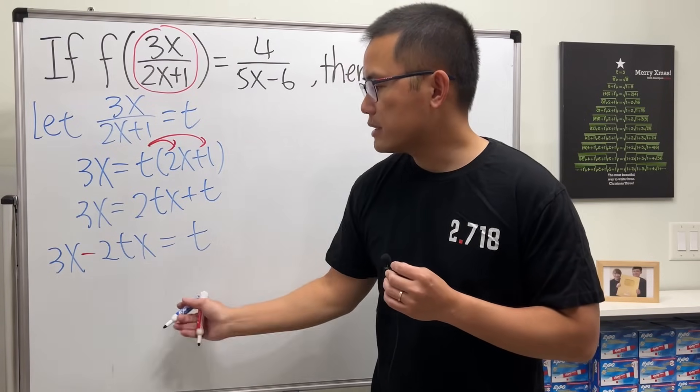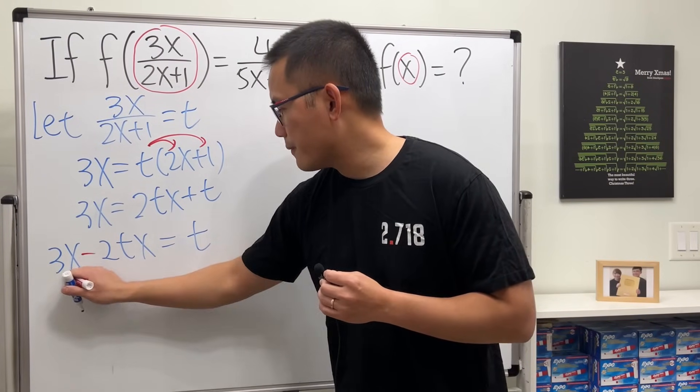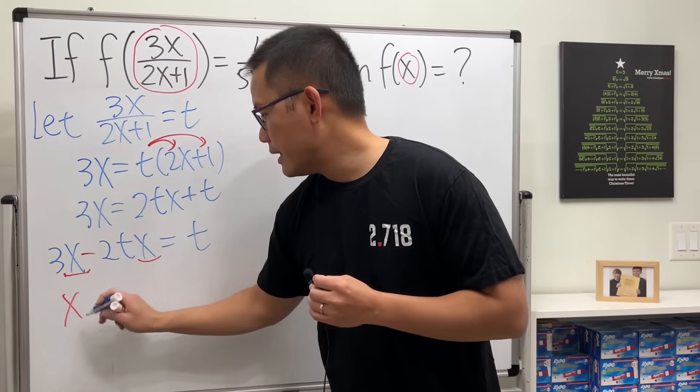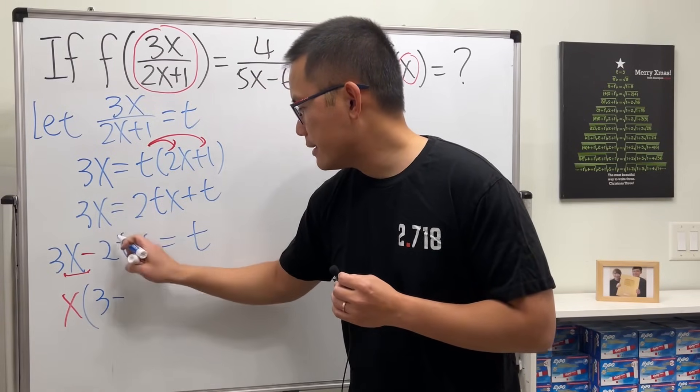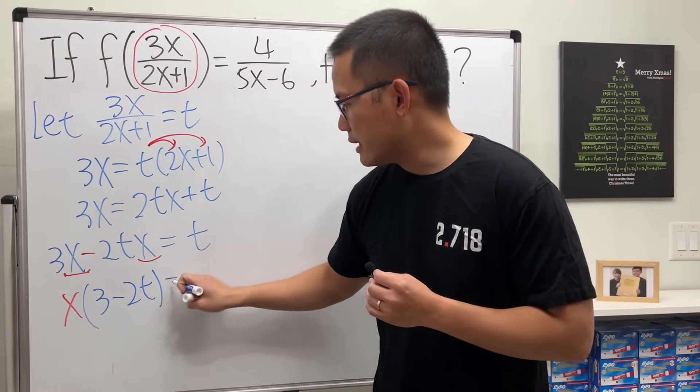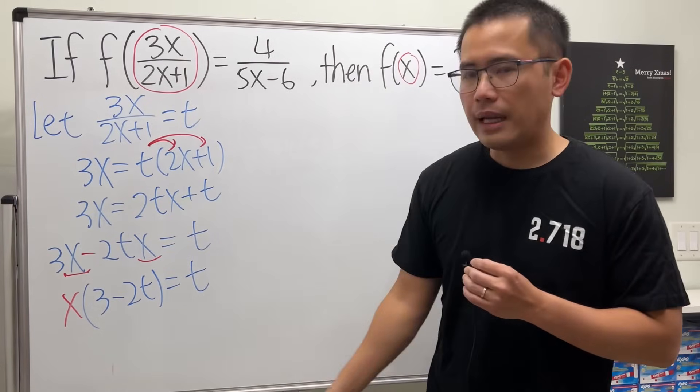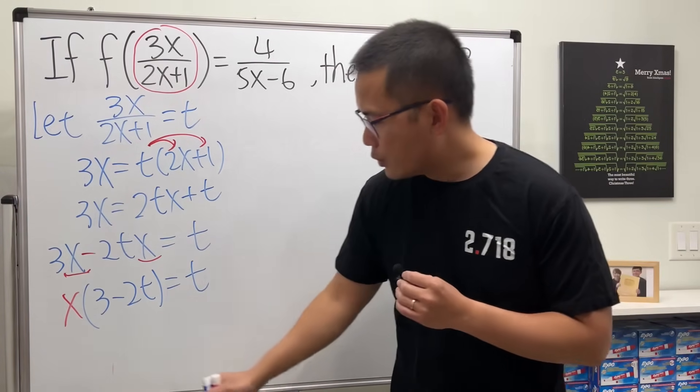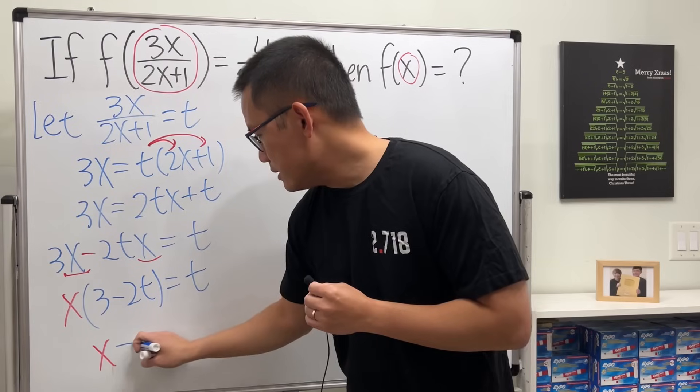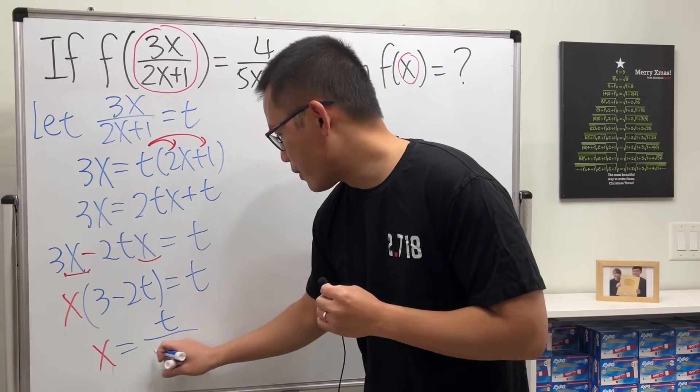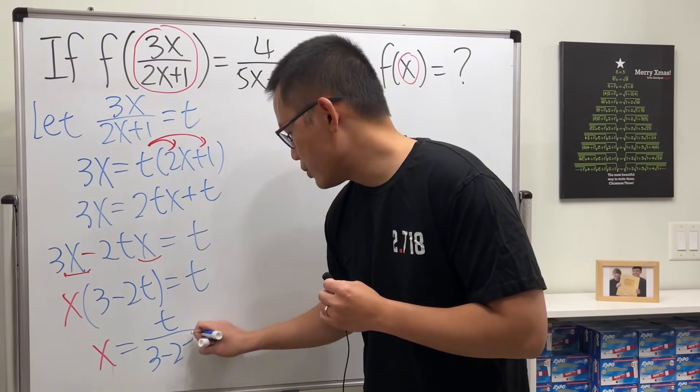Here we have x and here we also have x, so we can factor that out. Then we will just get x times 3 minus 2t equals t. Then just divide this to both sides. We can get x is equal to t over 3 minus 2t.